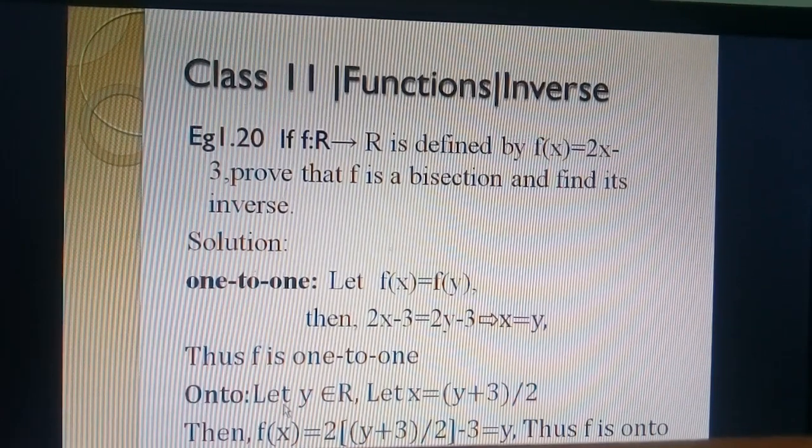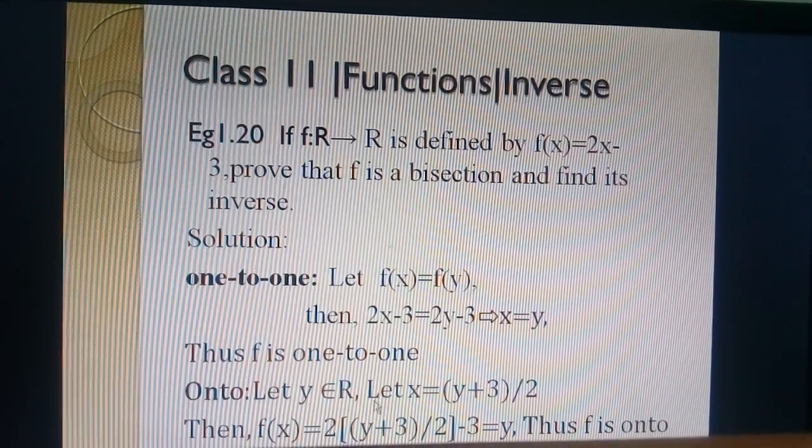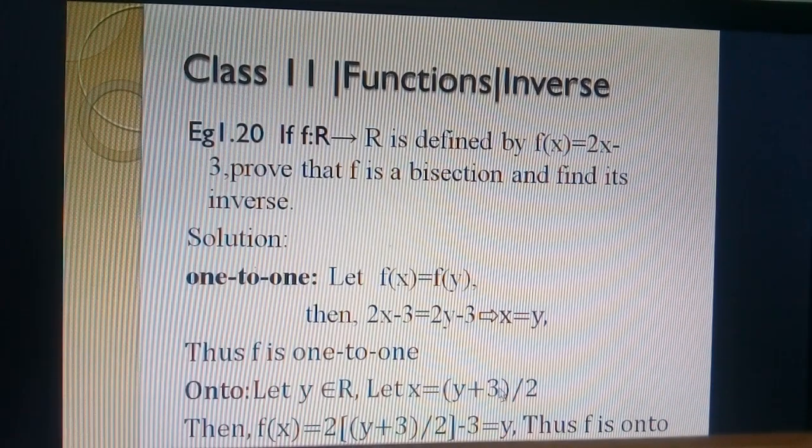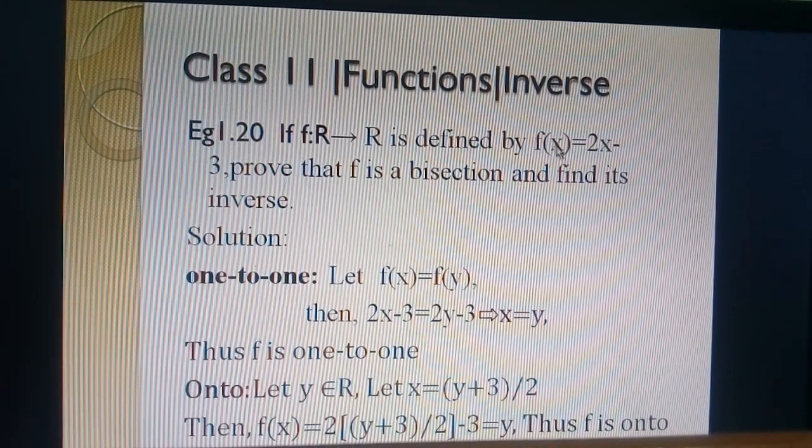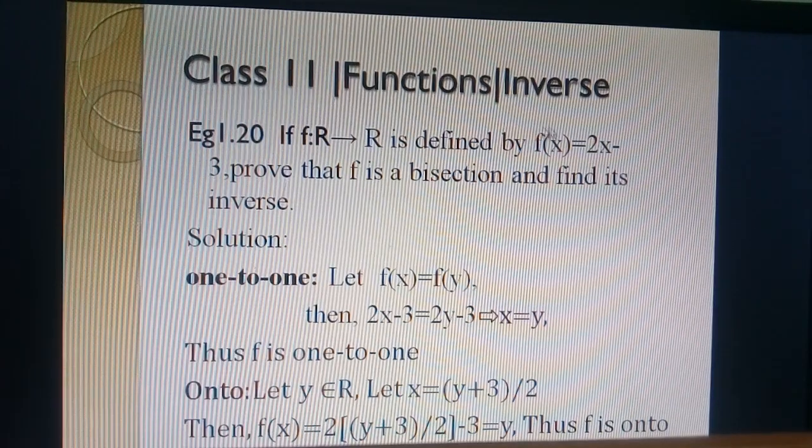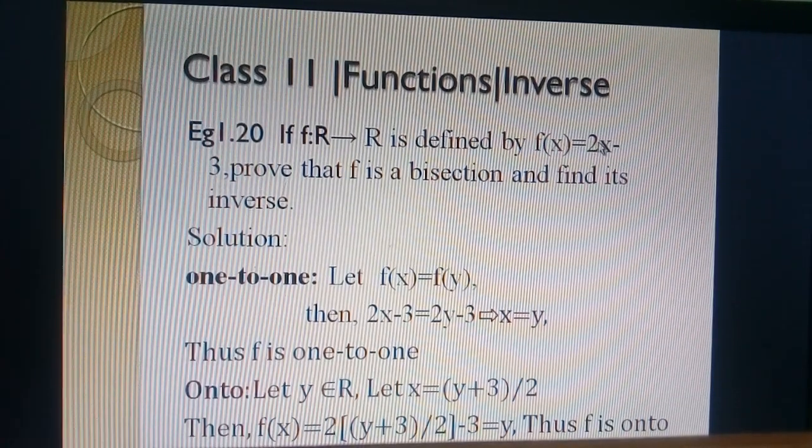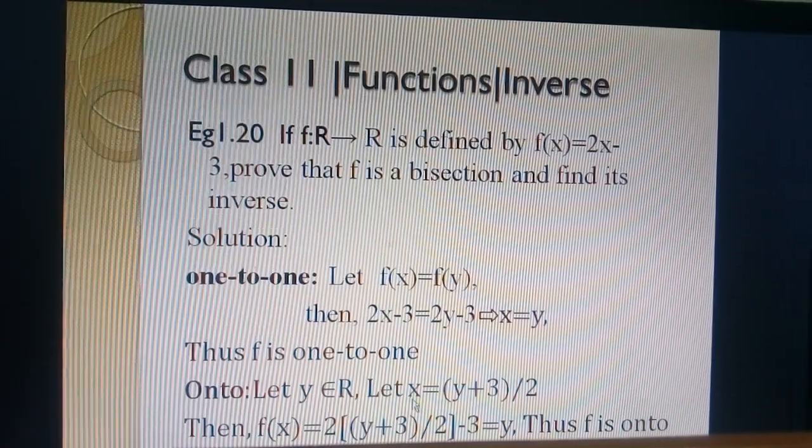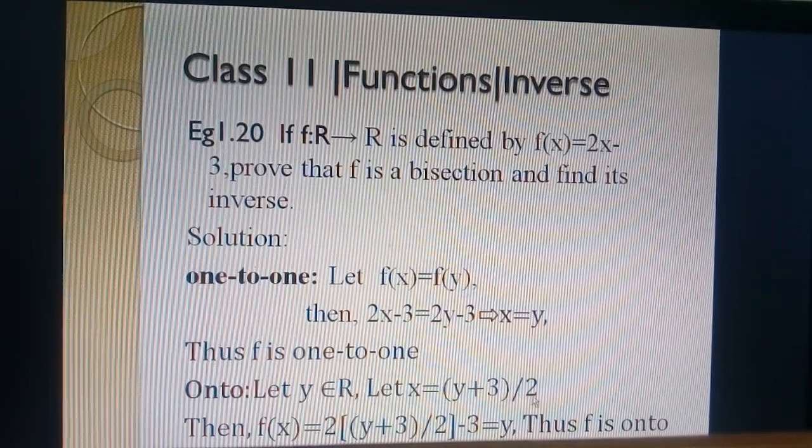Then, we prove onto. Let y belong to R. We take x value from given f(x) = 2x - 3. We take f(x) as y. We have y = 2x - 3. From this, we get x value: x = (y + 3)/2.